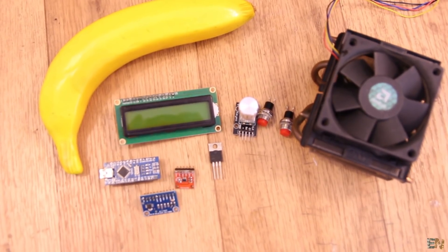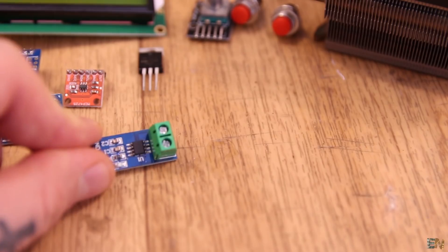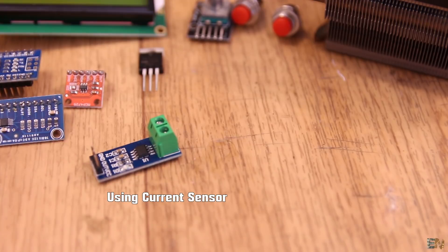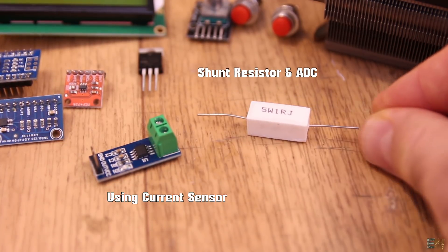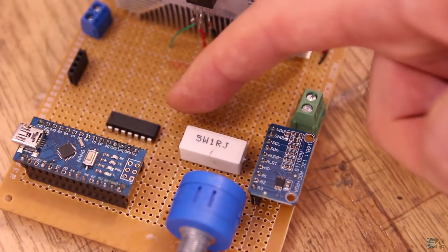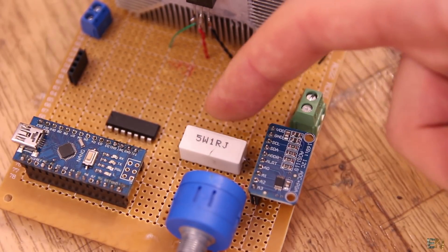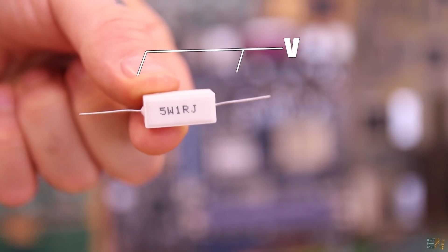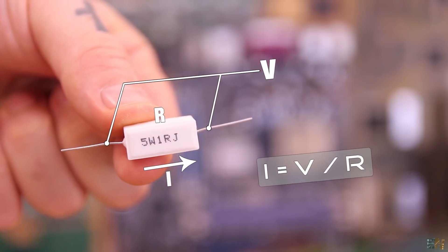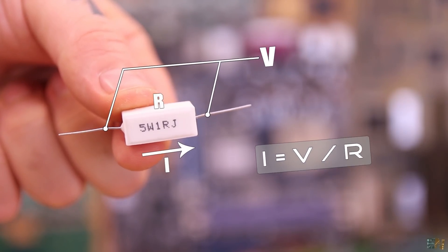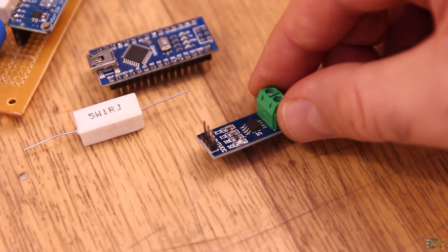For that we also have two options. In the last project I was using a 1 ohm resistor shunt and I was measuring the voltage drop on this resistor with a 16-bit ADC. If you know the voltage and you also know the resistance value, you can calculate the current value. Another solution is to use this type of current sensor.